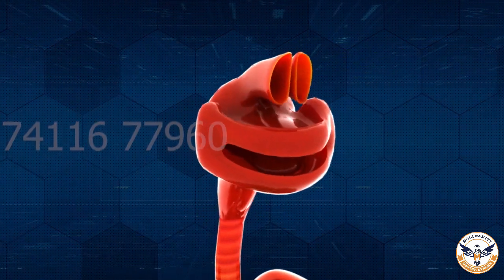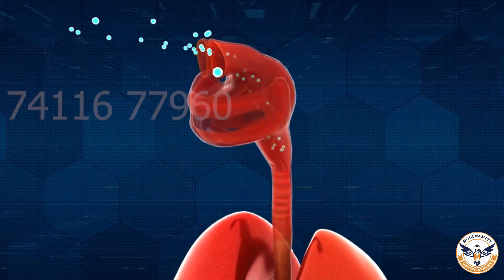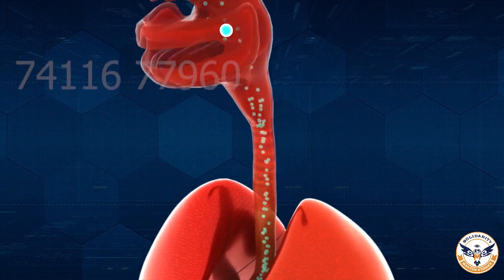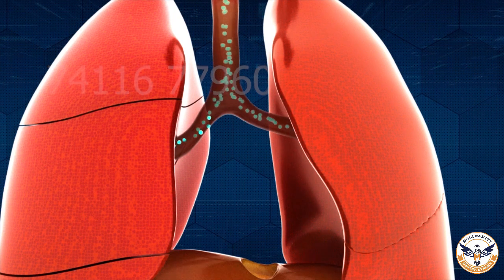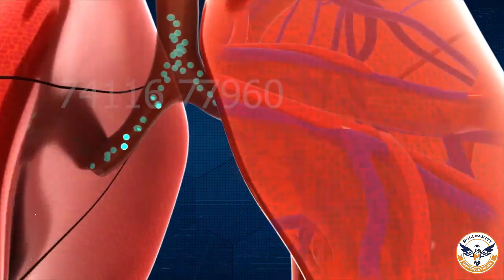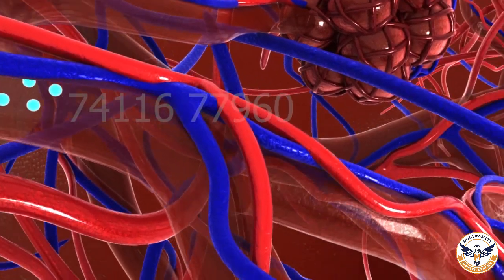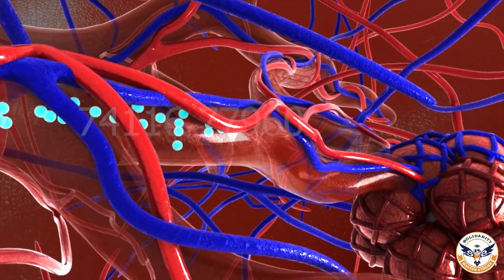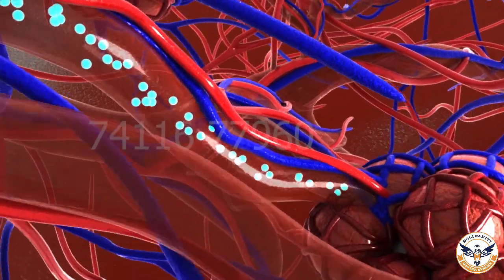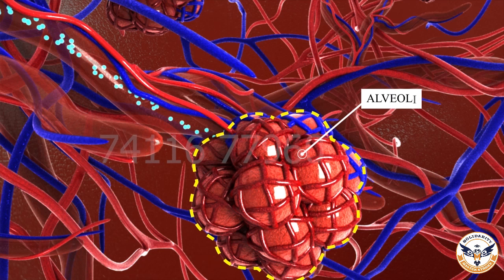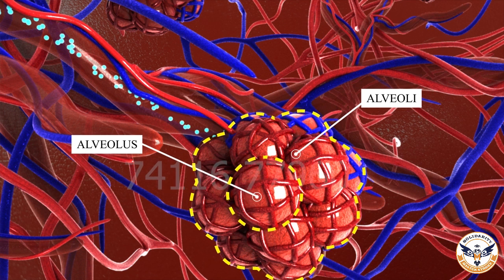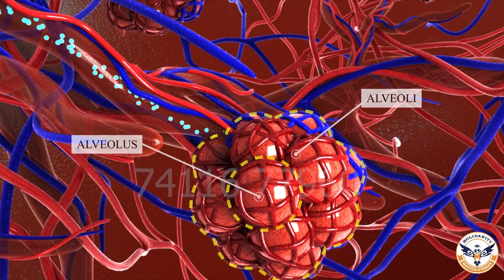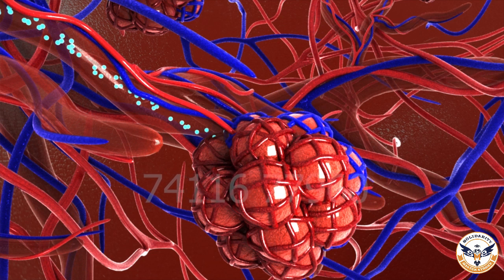As we breathe in air, the oxygen particles enter the nostrils and travel downwards through the pharynx and windpipe, to at last arrive at the bronchi. From every bronchus, oxygen goes into the lungs. Within the lungs, the passage divides into smaller and smaller tubes which finally terminate in balloon-like structures called alveoli. The alveoli provide a surface where the exchange of gases can take place. The walls of the alveoli contain an extensive network of blood vessels.